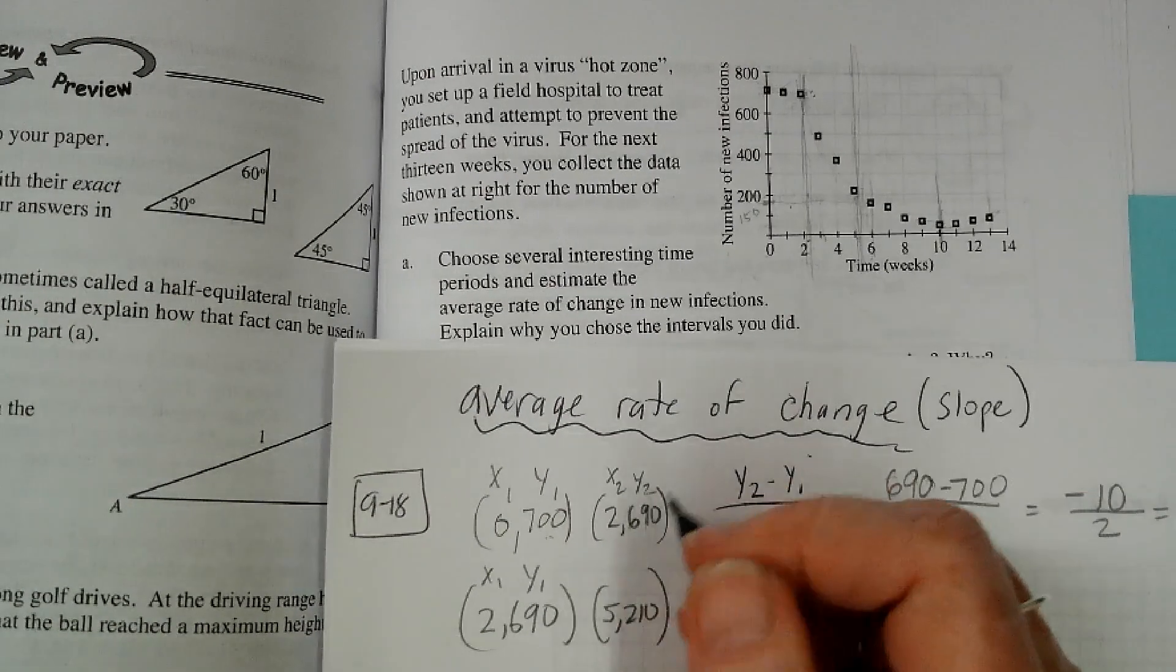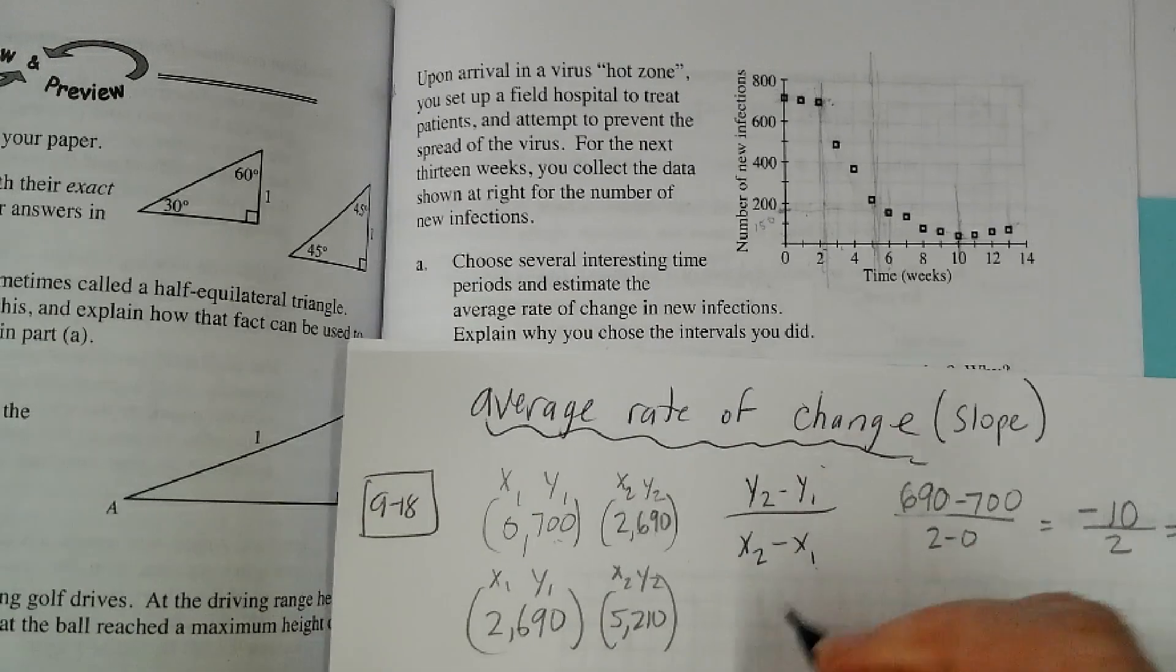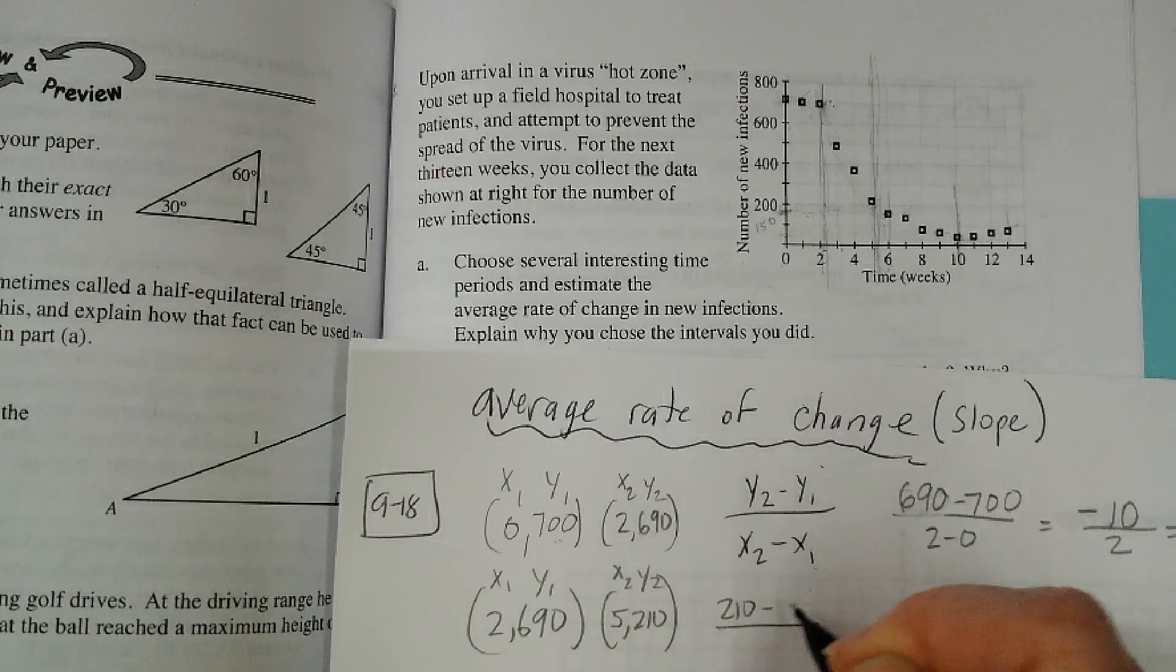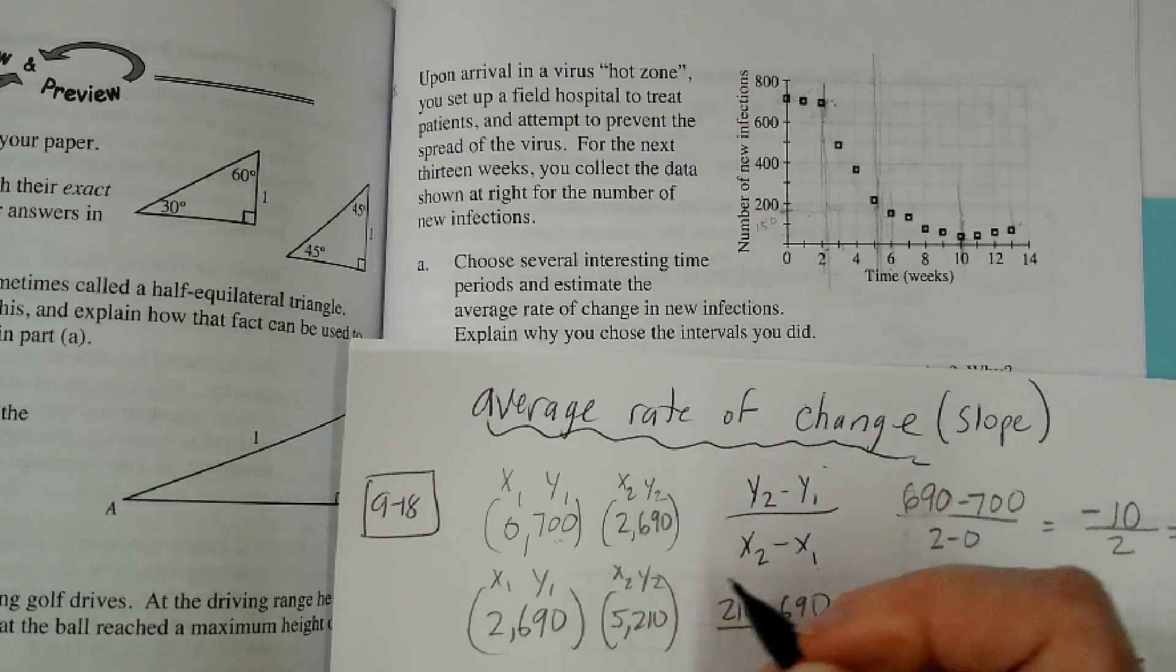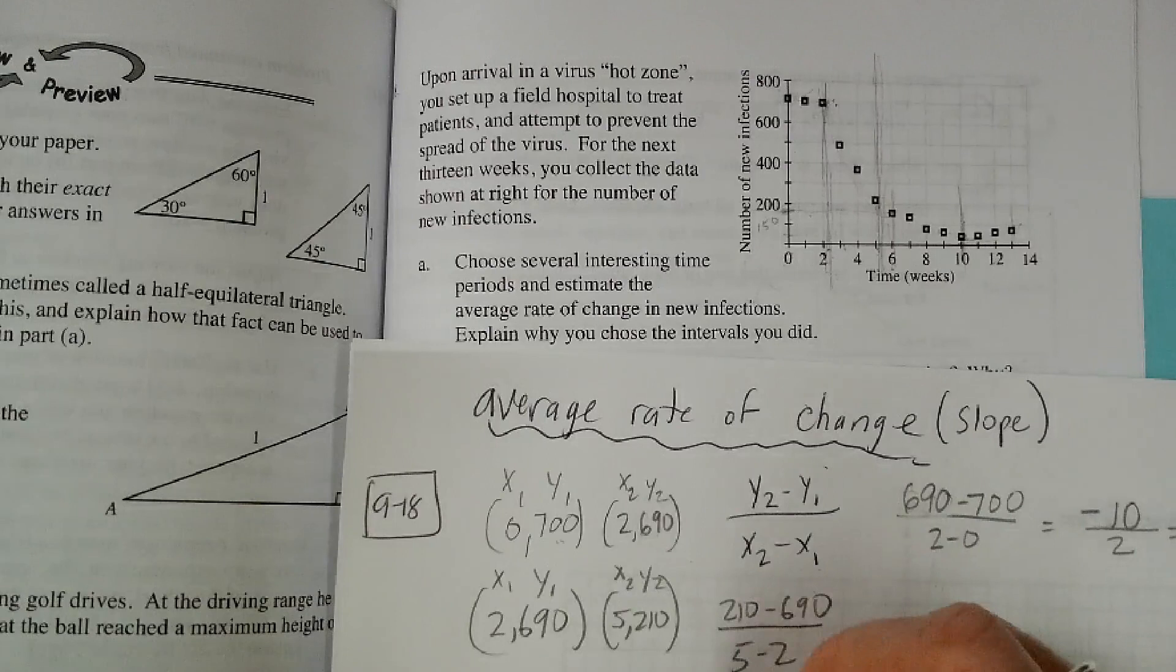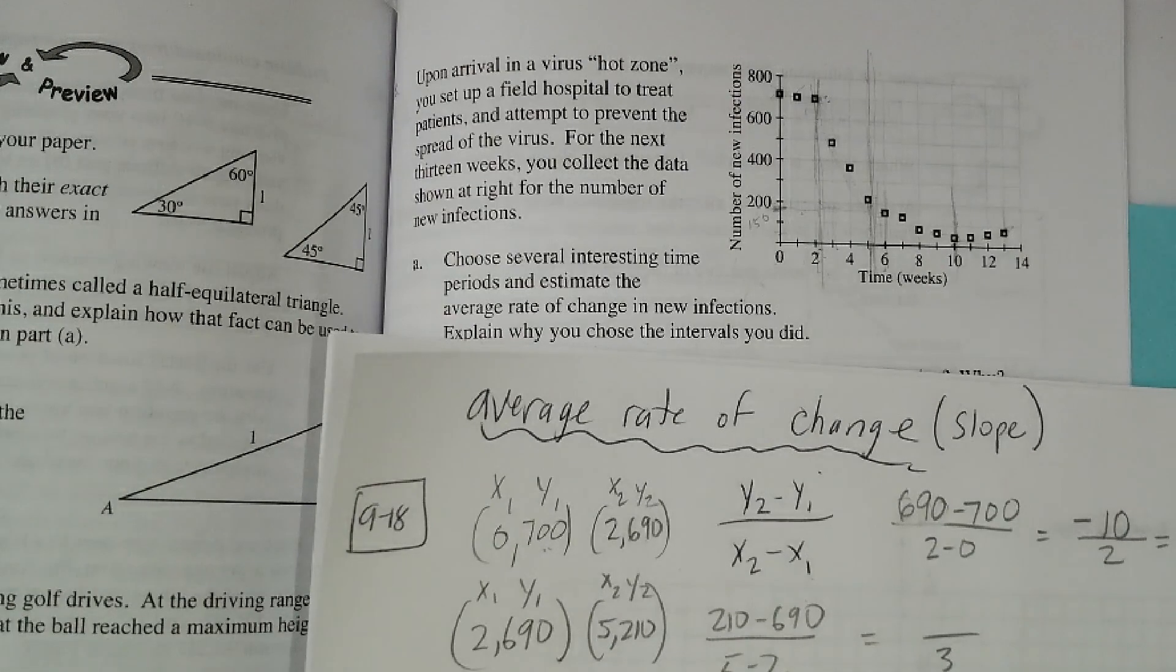Should I call it 210? I'll just call it 210. I don't care if it's perfect. So I'm going to go Y2 minus Y1, so 210 minus 690. X2 is 5, X1 is 2. So that gives me 5 minus 2 is 3. I don't know what 210 minus 690 is.